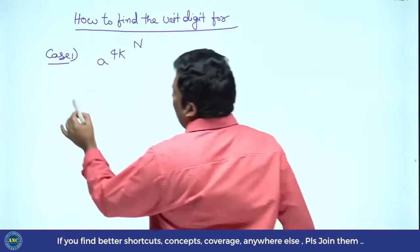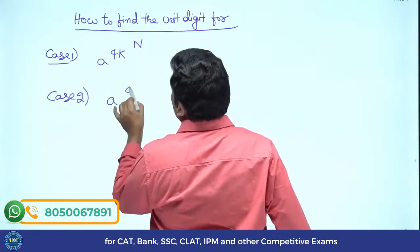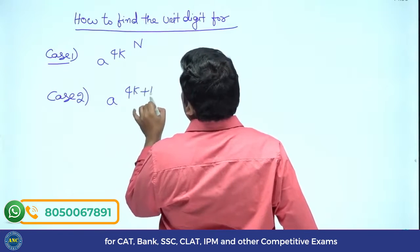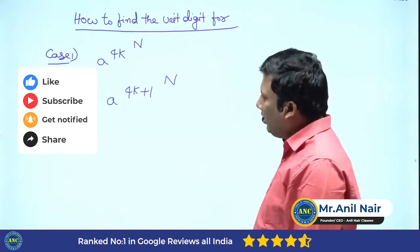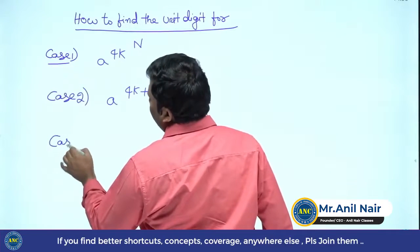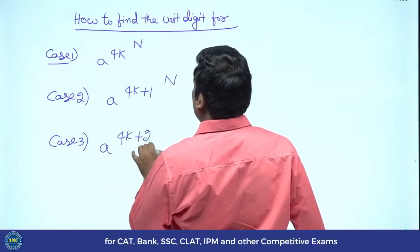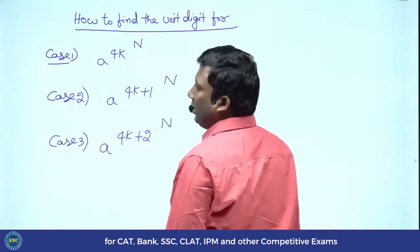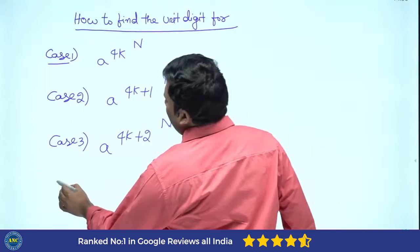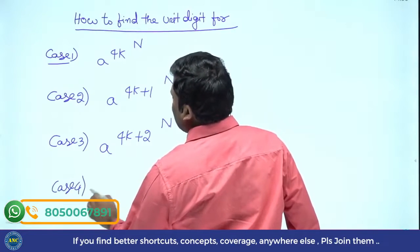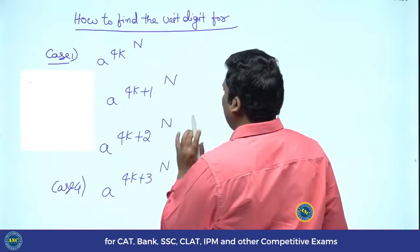2nd case: when it is divided by 4, it gives a remainder 1. Case number 3: when it is divided by 4, it gives a remainder 2. We are doing power to the power to the power and so on. What is case number 4?